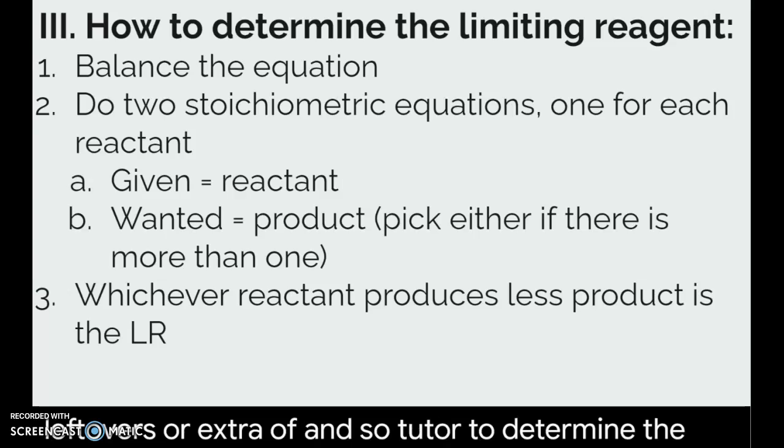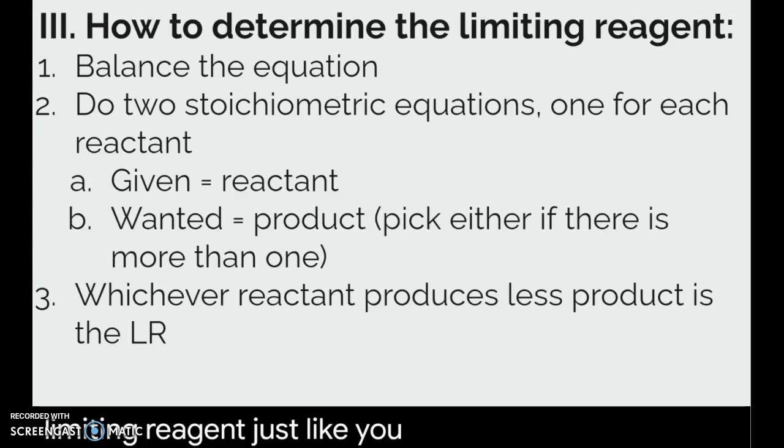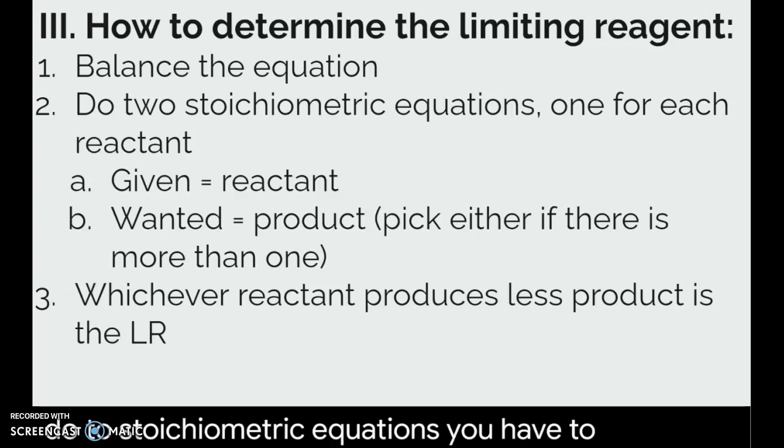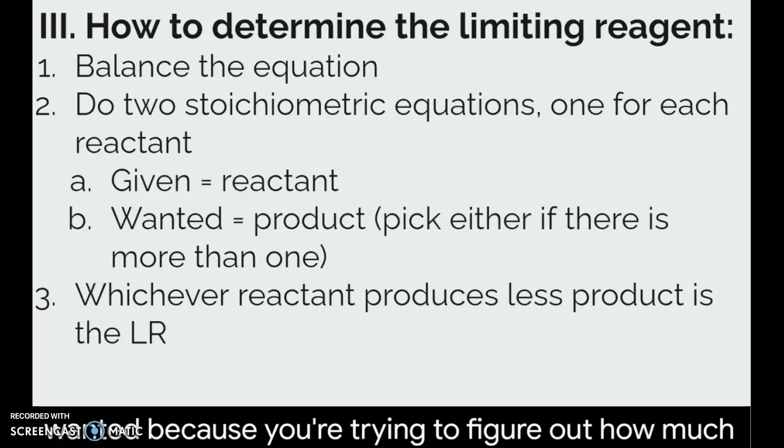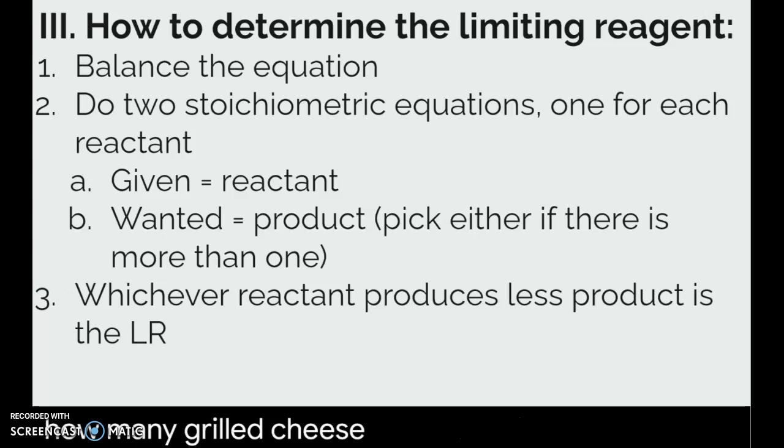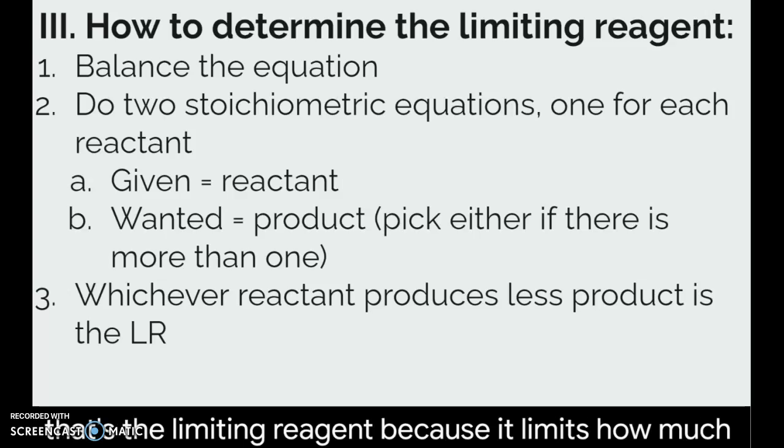And so to determine the limiting reagent, just like you did with the other stoichiometry three-step equations, you're still going to balance the equation first, but this time you have to do two stoichiometric equations. You have to do one for each of the reactants. And in both of these situations, the given is your reactant, and then the product is your wanted. Because you're trying to figure out how much product can I make if I have this much reactants? Like how many grilled cheese can I make if I have 10 pieces of cheese? How many grilled cheese can I make if I have 25 pieces of bread? And so whichever one produces the least or the lower amount of product, that's the limiting reagent because it limits how much of the product we can make.